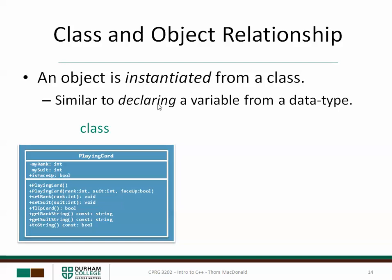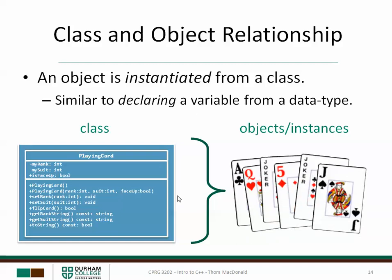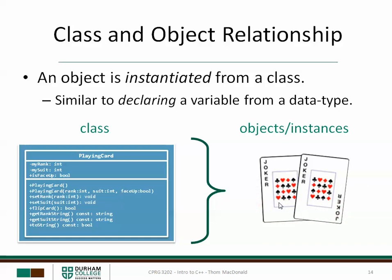Instantiate is basically a fancy way of saying create or declare. So we have our class PlayingCard, which defines certain attributes and all these behaviors. From this class, we can actually create several different playing card objects. It's important to understand the difference between the class, which is just the blueprint, and the actual objects, which are actual playing cards. Each playing card could have a different state — you can see here Ace, Queen, Five, and Jack, all different suits. Even though two objects might have the same state, that doesn't make them the same object.